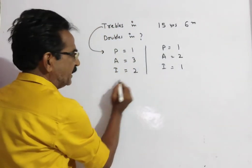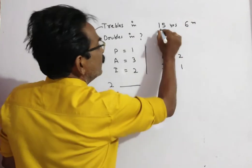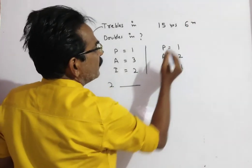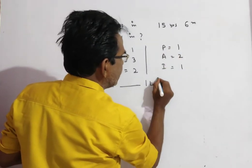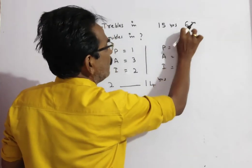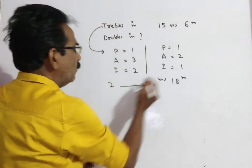So for getting 2 rupees interest, it requires 15 years, 6 months. Friends, 15 years, 6 months means 14 years, 12 plus 6, 18 months. 14 years, 18 months.